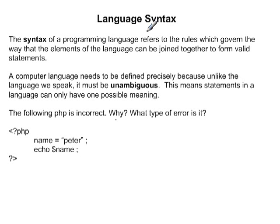We're looking at language syntax and how that language syntax is described using meta-languages. Language syntax is how you write the language of a programming language, and that syntax must be unambiguous — for example, only having one meaning.